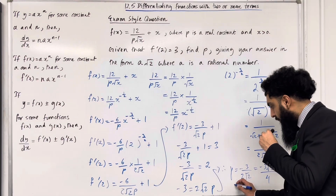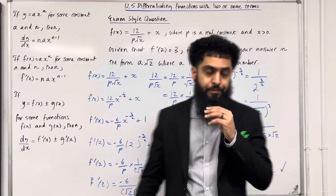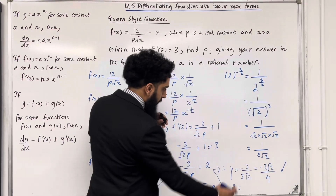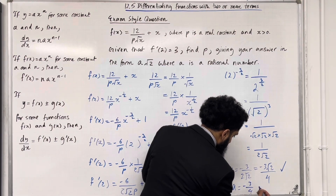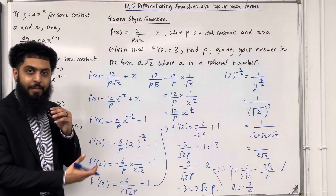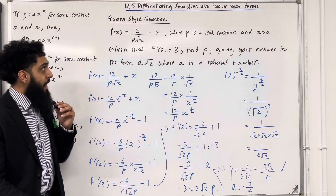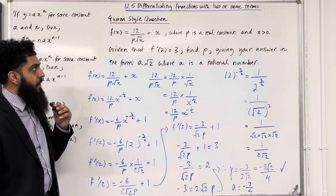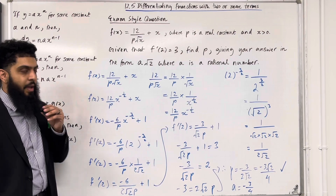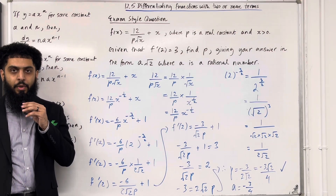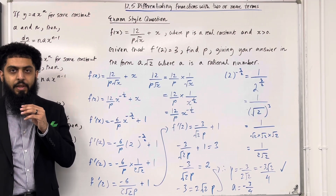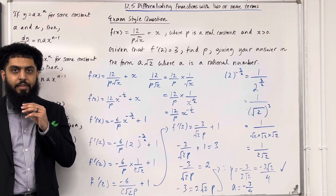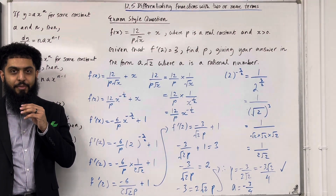So the rational number a is equal to −3/4. This completes the exam-style question and teaching video 12.5: differentiating functions with two or more terms. If you found this teaching video useful, please don't forget to subscribe, leave a like, leave a comment, and turn on your notification bell so you receive notifications every time I post a new teaching video. See you in the next video.